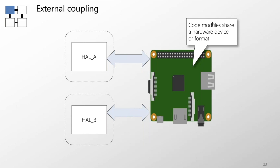Closely related to common coupling is external coupling, where two modules are bound together by the structure or format of a hardware device — for example, a GPIO port. Here we have two software modules, hardware abstraction layer A and B, both controlling the same piece of hardware. Generally, we want a one-to-one mapping between driver software and the hardware it drives.